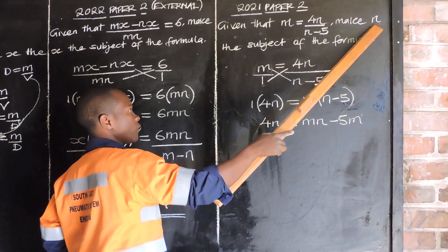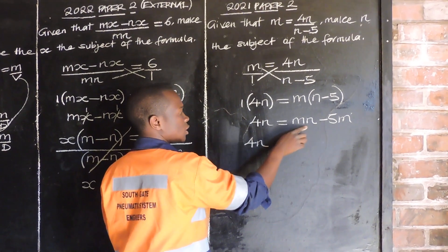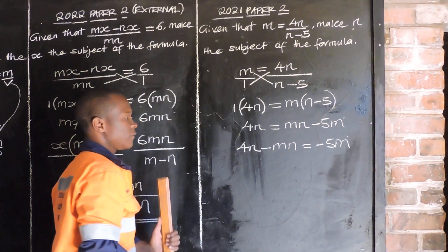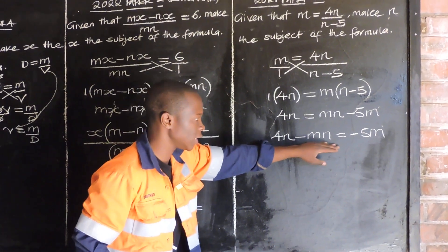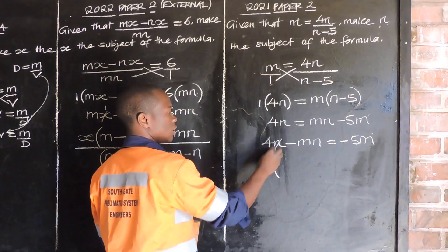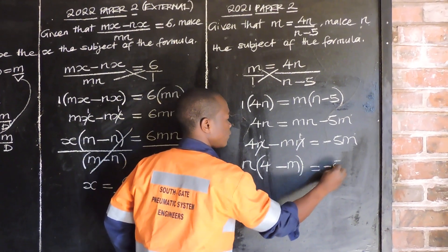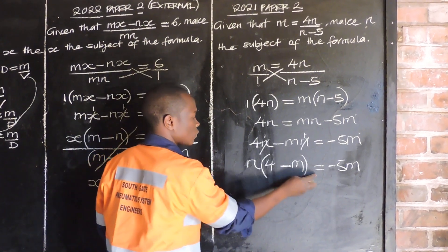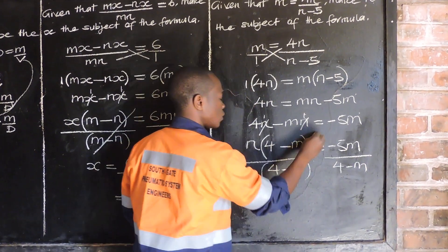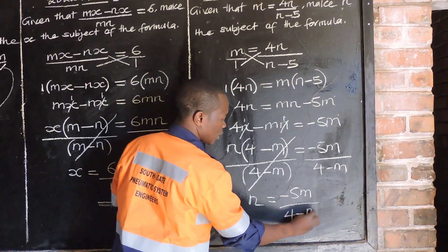Since we are making n the subject, we group n terms together. So 4n transposes to become negative mn on the left: 4n minus mn is equal to negative 5m. Now factorize: n is the common factor. So n open brackets: 1 times 4 gives 4, minus 1 times m gives m, close brackets, equals negative 5m. Divide both sides by 4 minus m. So n is equal to negative 5m over 4 minus m. That is our answer.